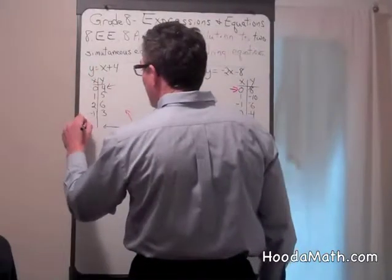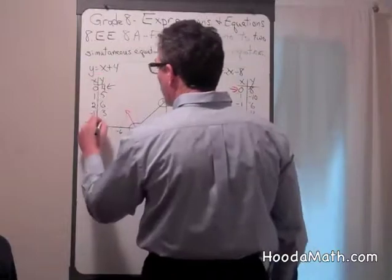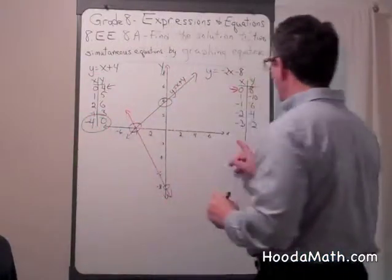If x is negative 4, negative 4 plus 4, y equals 0. Let's try over here.